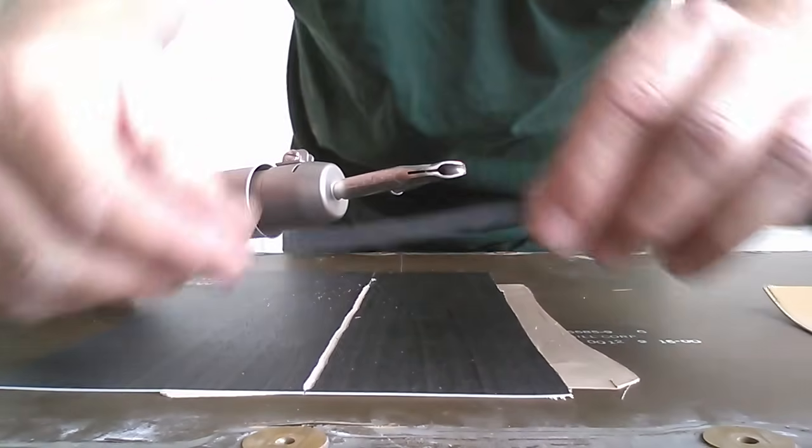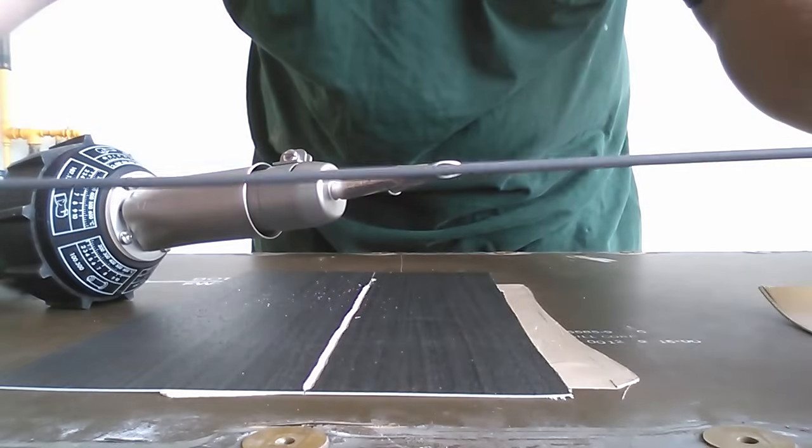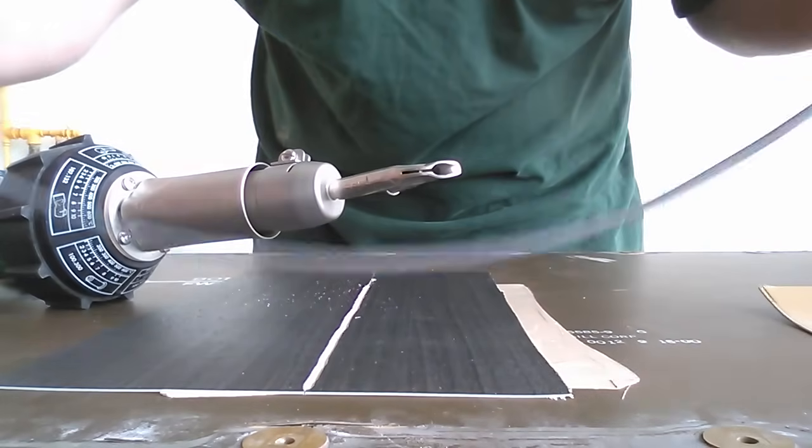You need a piece of welding rod. You want to cut it to the length and then some of your seam so you'll have a little extra to start and to finish.